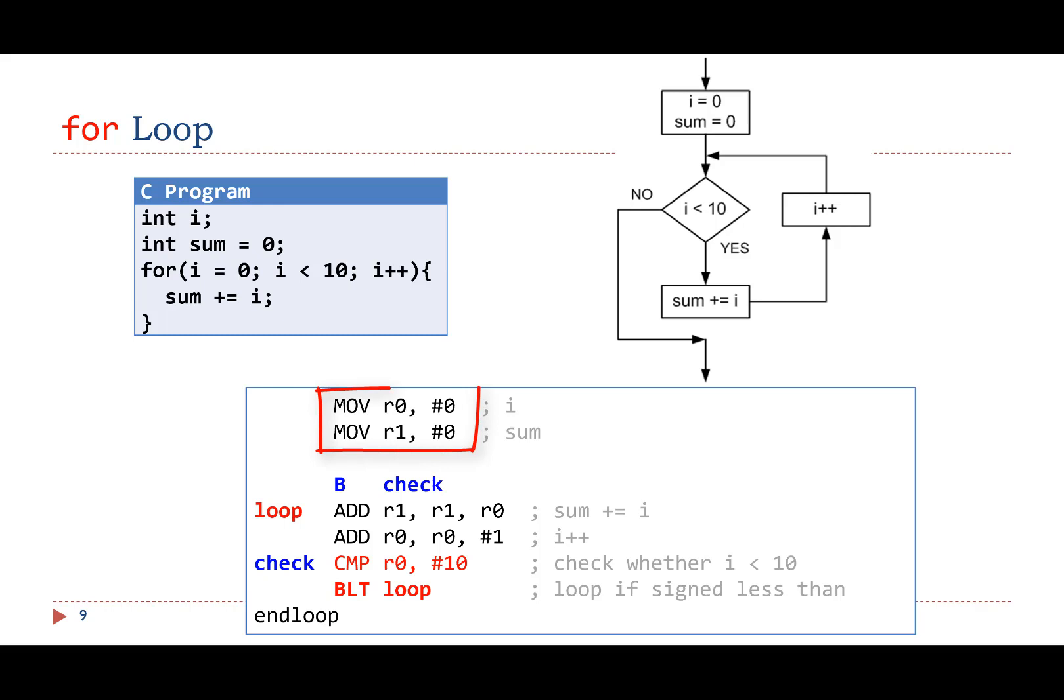First, it uses two move instructions to initialize the loop counter R0 and the sum R1 to 0. Second, the program goes to the check statement and compares the loop counter R0 and 10. It goes back to the beginning of the loop if R0 is less than 10.